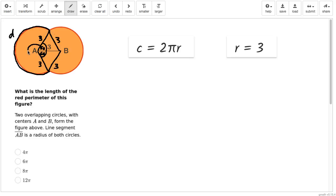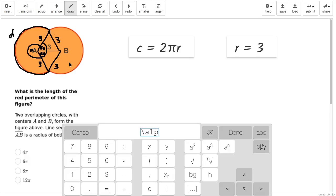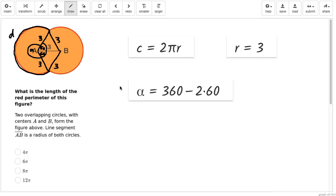Which means that this angle over here, let's call it alpha, is going to be alpha equals 360 minus 2 times 60.